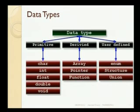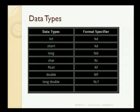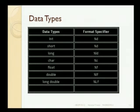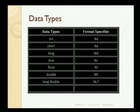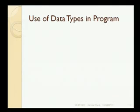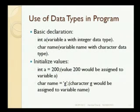Next, if you want to use a data type, there are basic format specifiers. For integer and short, the format specifier is %d. For long it is %ld. For character it is %c. For float it is %f. For double it is %lf. When we go through programming, I will show you how to use all these things in a program.